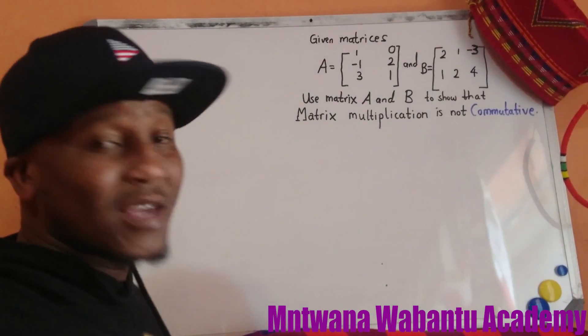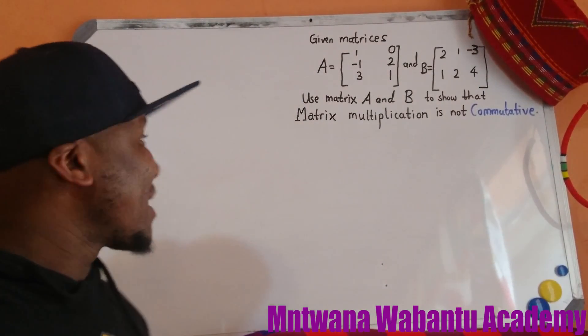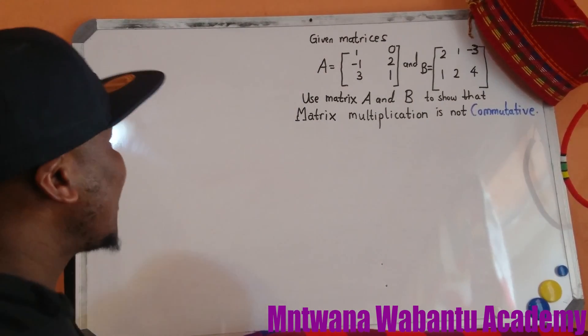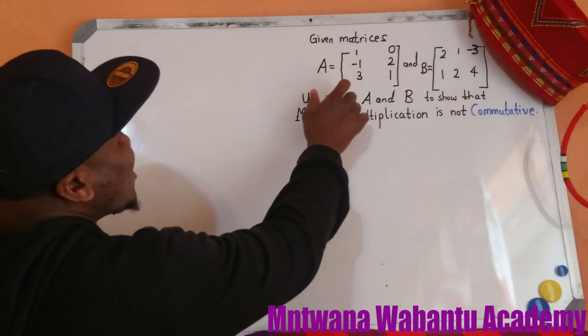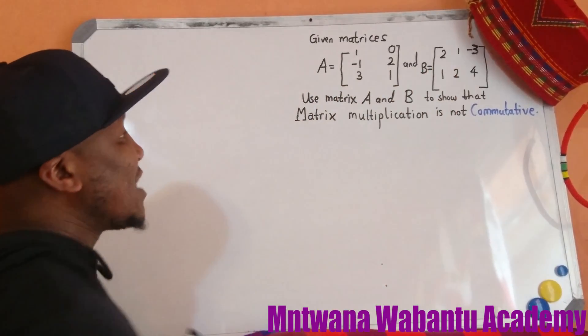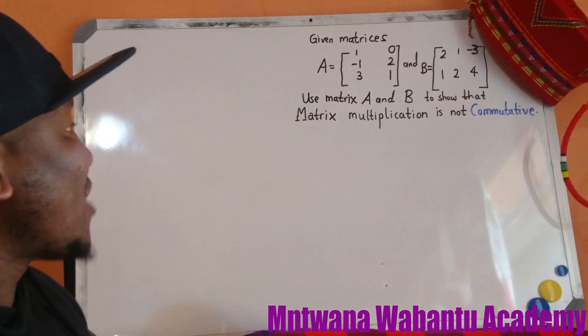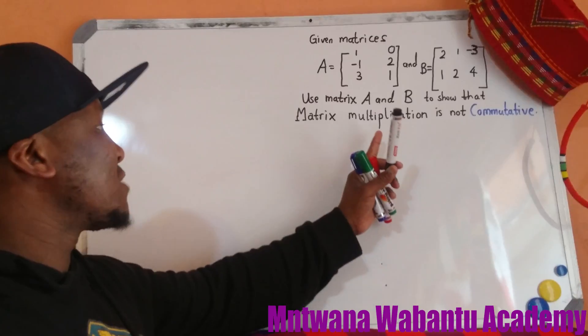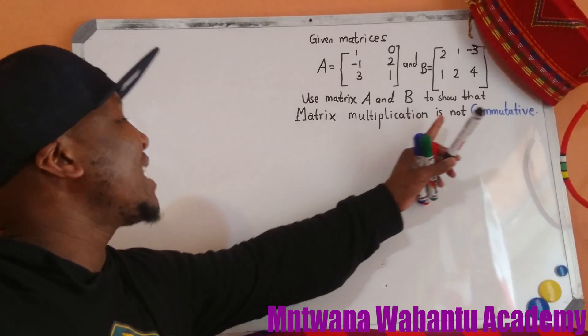Yo, what's up? It's your boy again. So we have a question here. They say given matrix A equal to that one and B given that one. Use the matrix A and B to show that the matrix multiplication is not commutative.